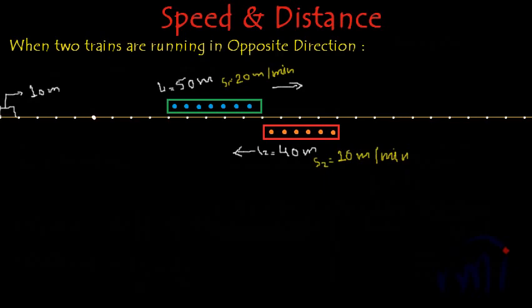Now let's see what happens when they try to cross each other completely. Suppose this is the starting point where the trains are just about to cross each other. At this particular moment their front ends are in perfect alignment with each other, and in the very next moment they will start overlapping.